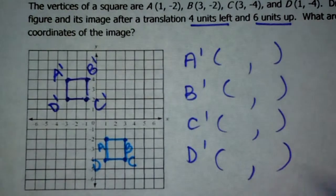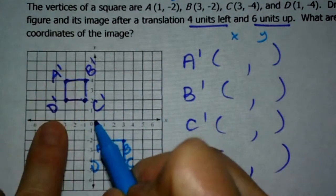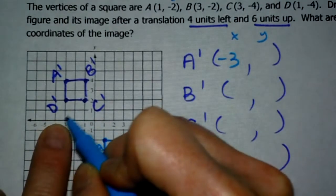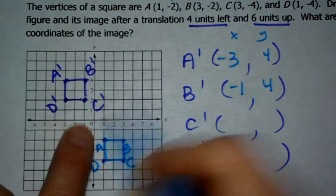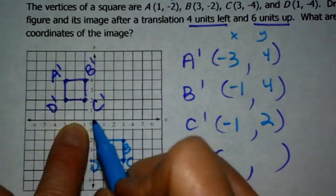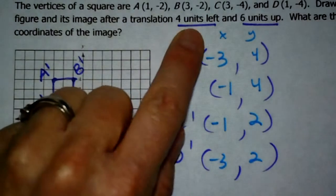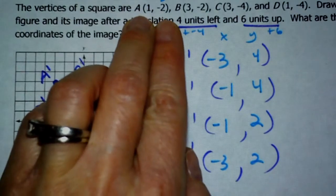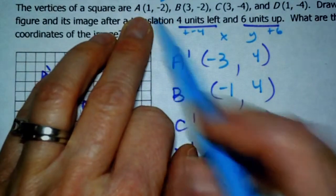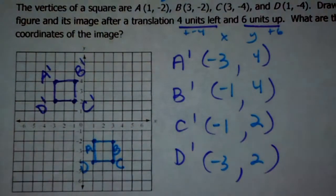I'll list the ordered pairs. A prime: to get there you go left three and up four, so that's negative three, four. B prime: left one and up four, so that's negative one, four. C prime: left one and up two, so that's negative one, two. D prime: left three and up two, so that's negative three, two. Four left means you'd add a negative four to X, and six up means you'd add six to Y. For example, A is one, negative two: one plus negative four is negative three, and negative two plus six is four. You can use that to double check your answer.